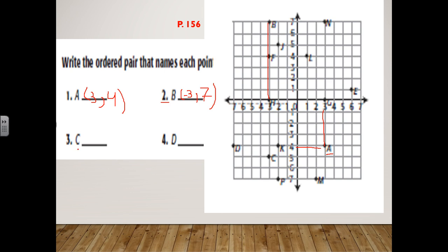For point C, x is negative three and y is five. The last one, point D, has x equal to negative seven and y equal to negative four. So point D is the ordered pair negative seven, negative four.